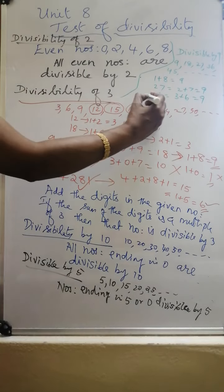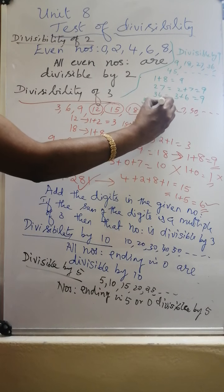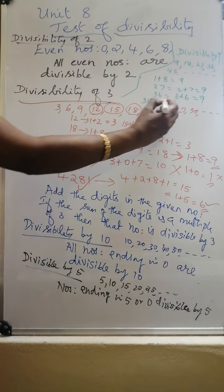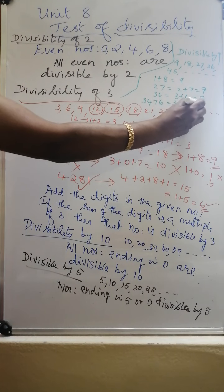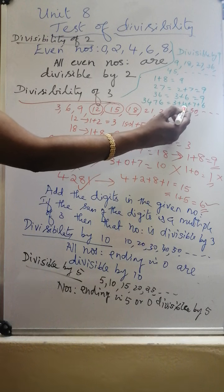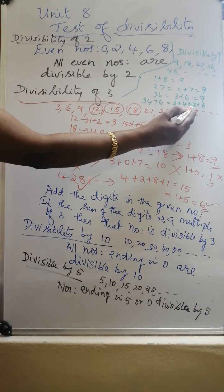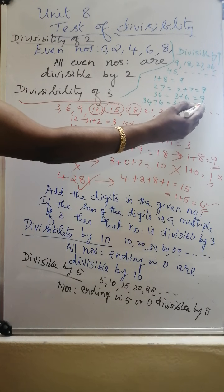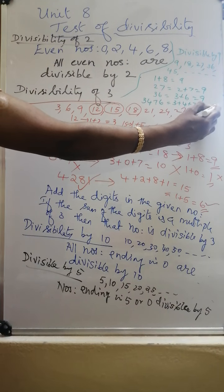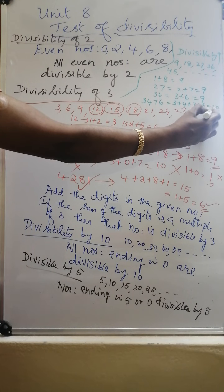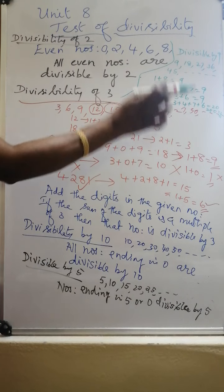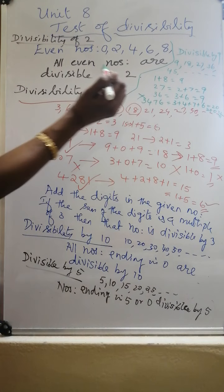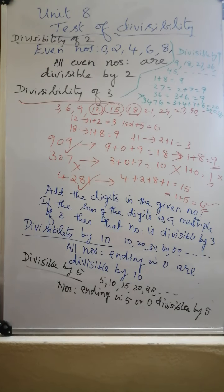For example, take the number 3476. Add the digits: 3 plus 4 plus 7 plus 6. 3 plus 4 is 7, plus 7 is 14, plus 6 is 20. Then 2 plus 0 is 2. 2 is not in the 9 times table, so this number is not divisible by 9.